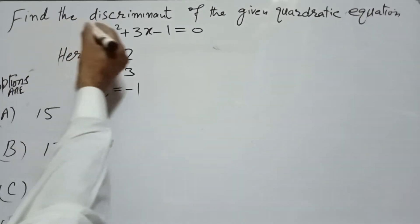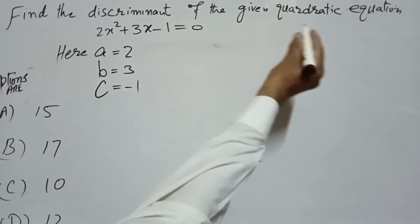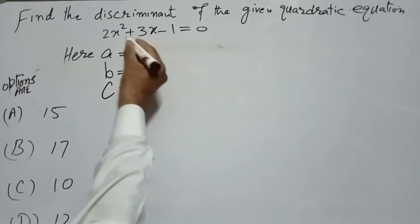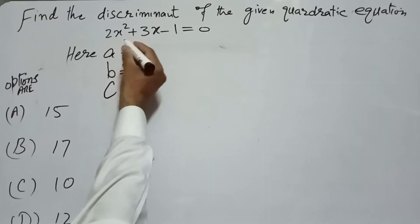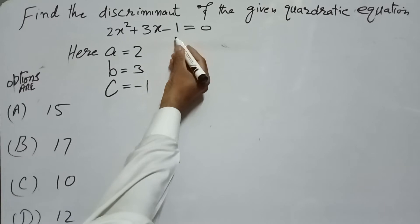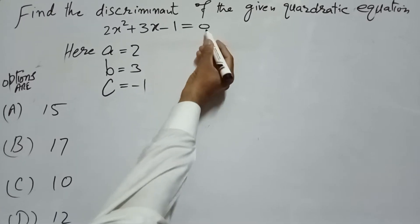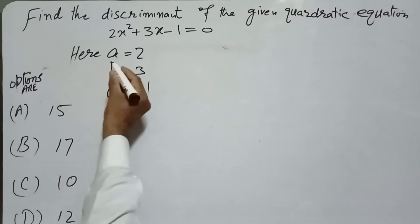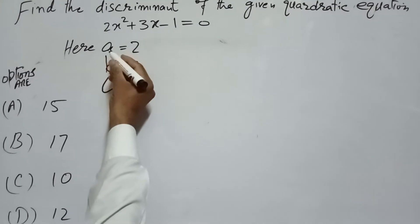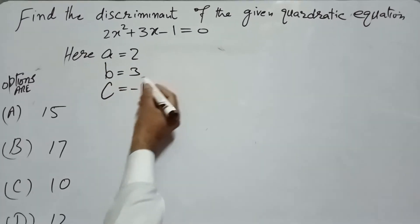In this video we will find the discriminant of the given quadratic equation 2x² plus 3x minus 1 equals 0. Here the value of a is equal to 2, b is equal to 3.